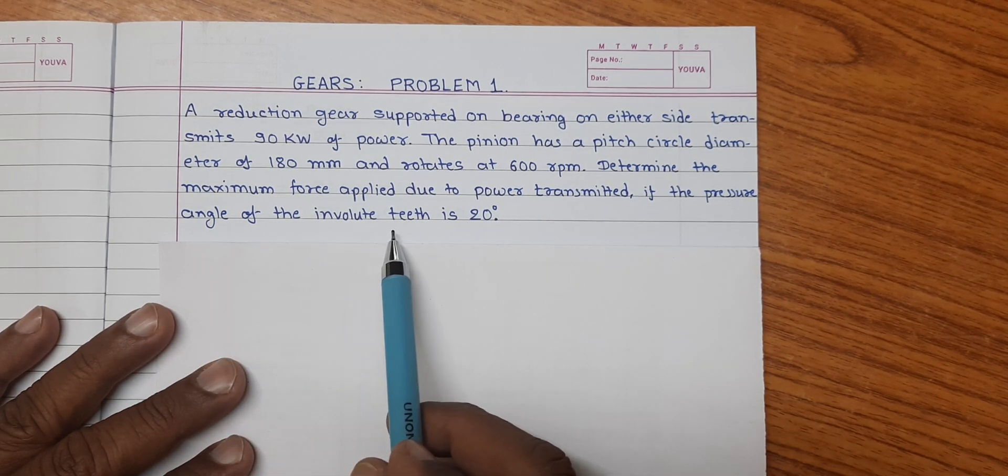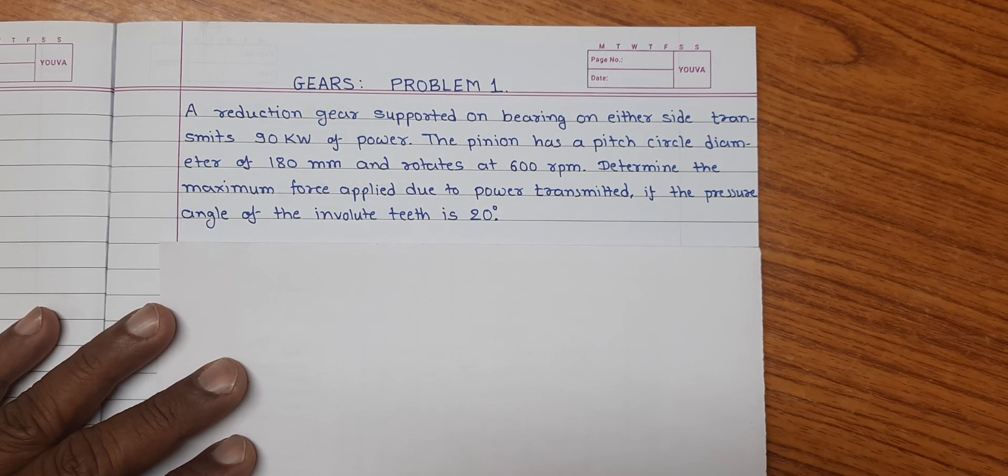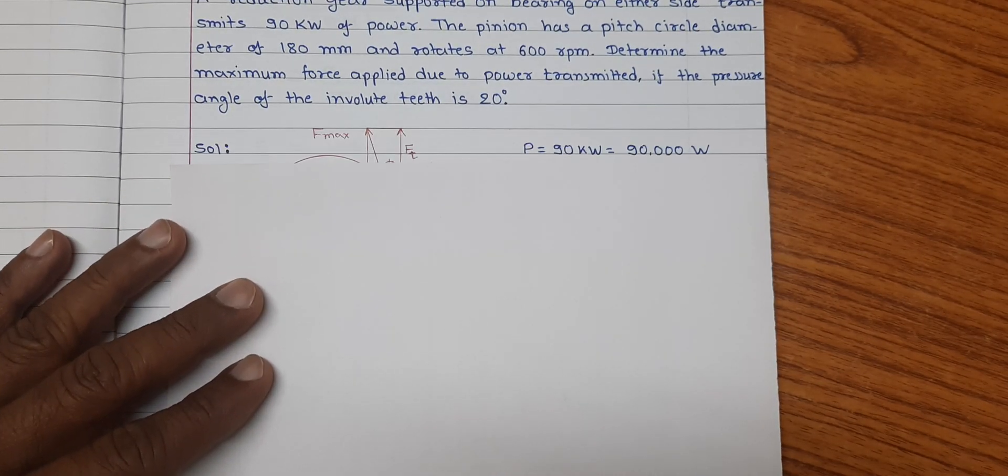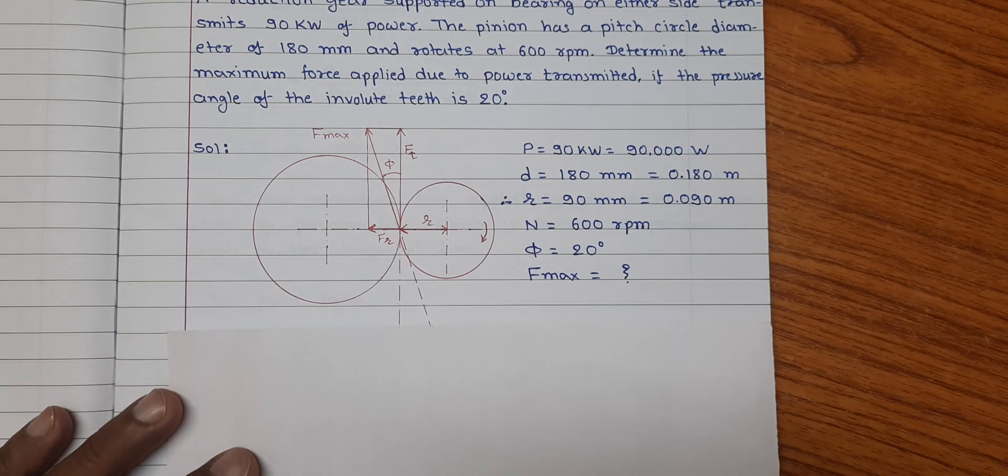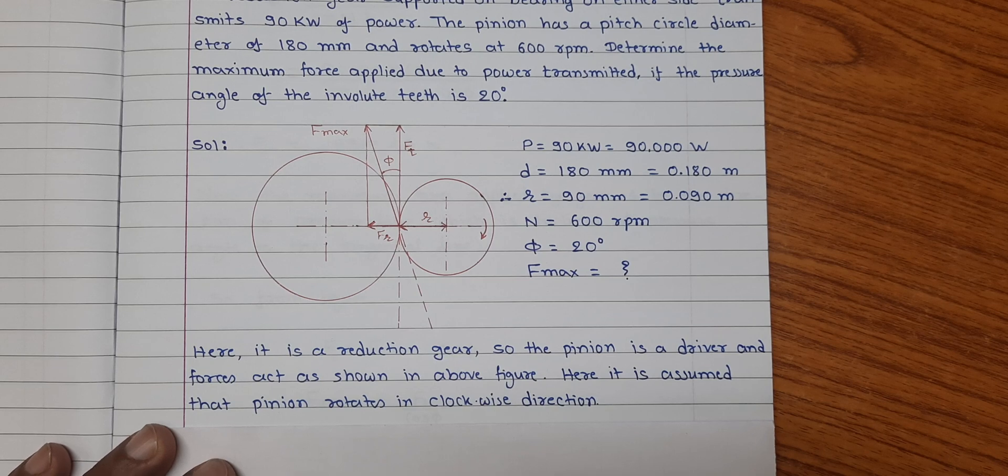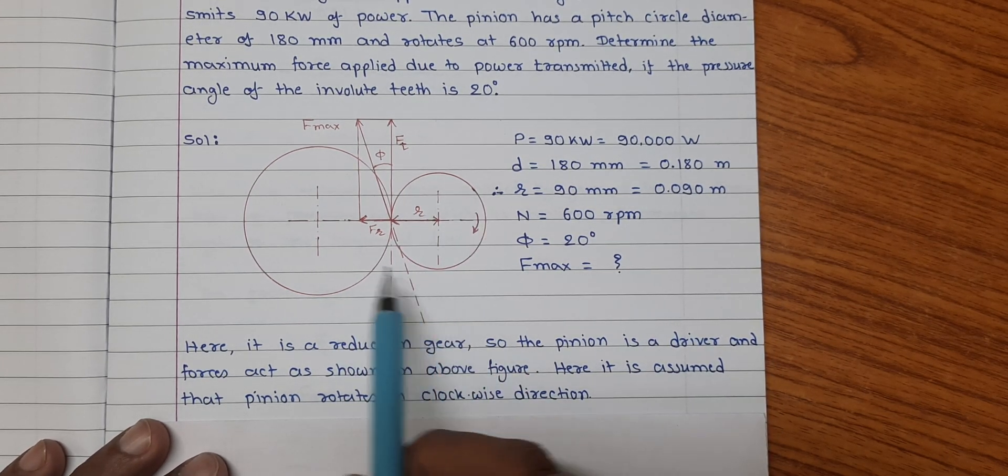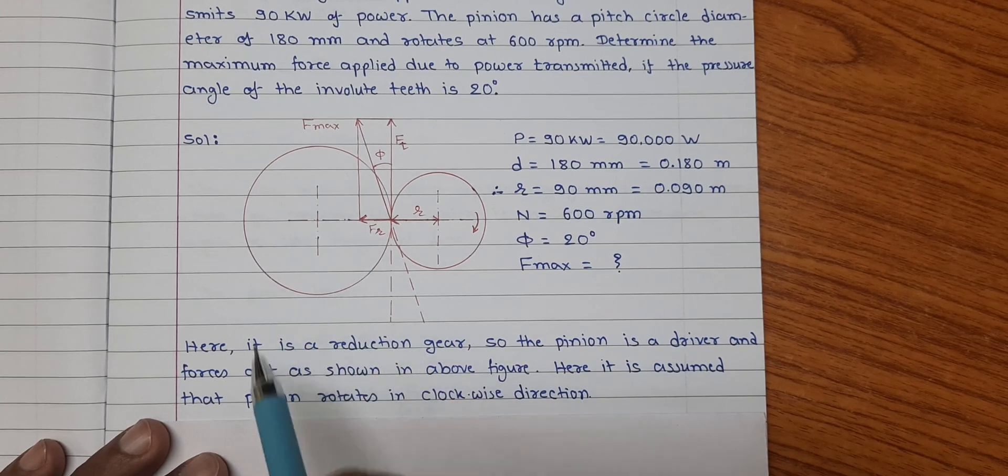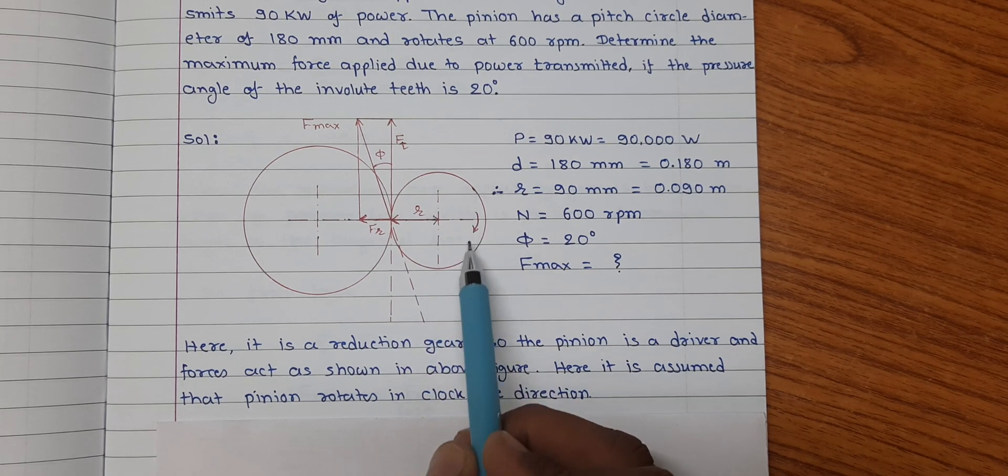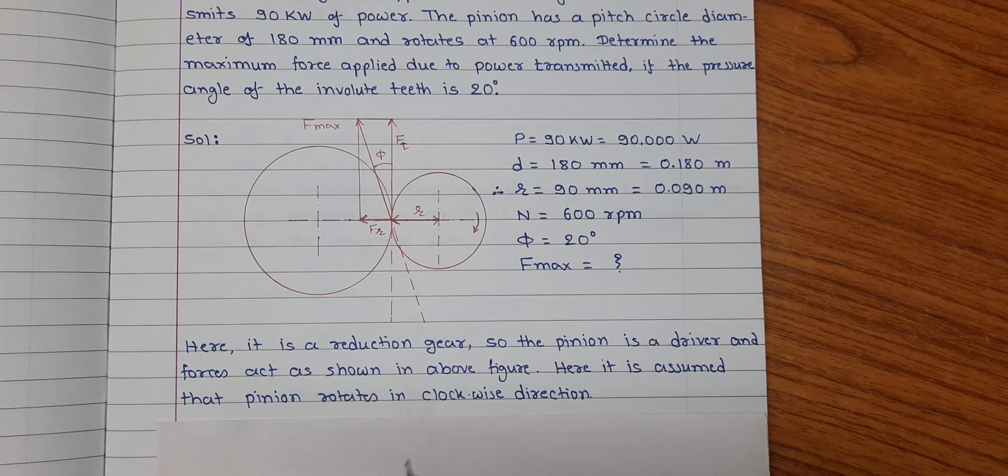Friends, let us first of all prepare the diagram and note down the given information. Here this is a pinion and this is a gear. It is assumed that the pinion rotates in clockwise direction and it is given that the system is a reduction gear.